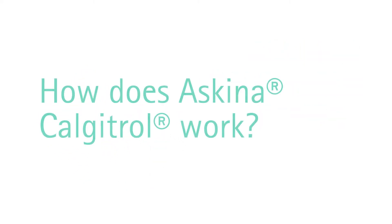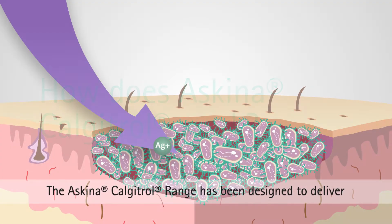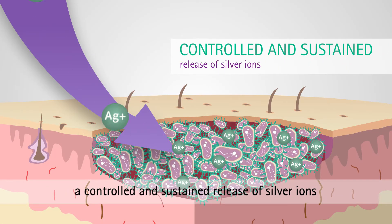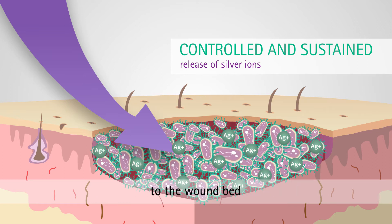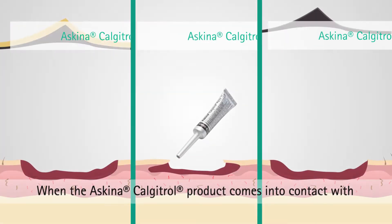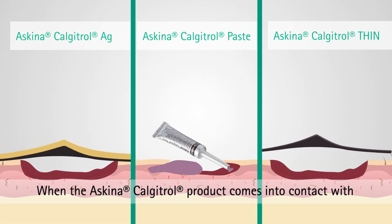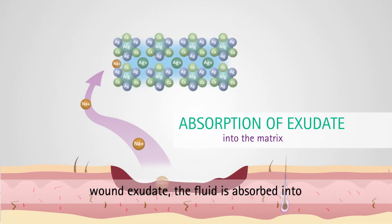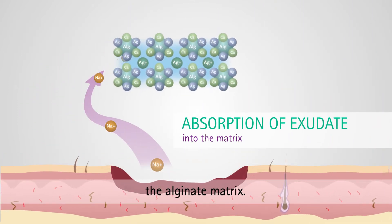How does Calgatrol work? The Calgatrol range has been designed to deliver a controlled and sustained release of silver ions to the wound bed. When the Calgatrol product comes into contact with the wound exudate, the fluid is absorbed into the alginate matrix.